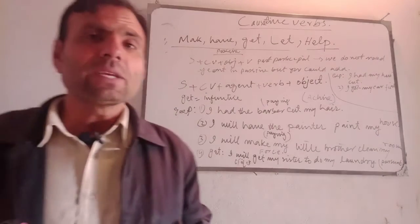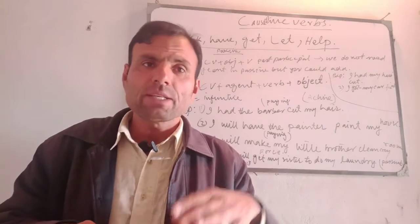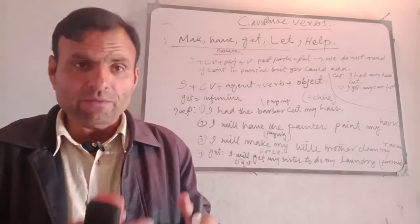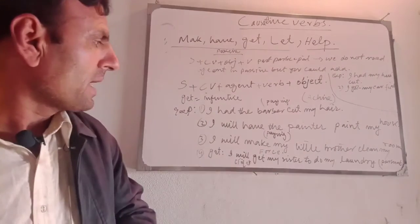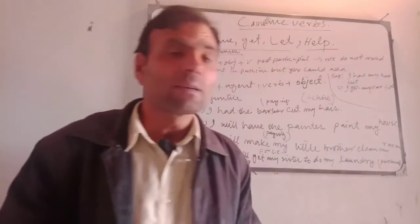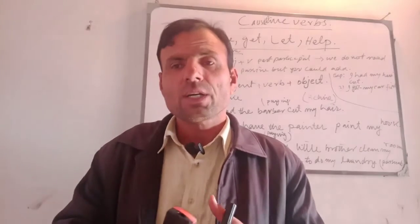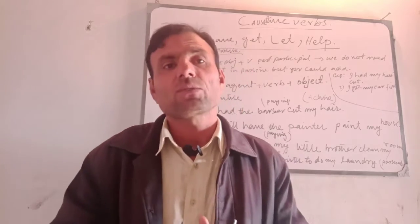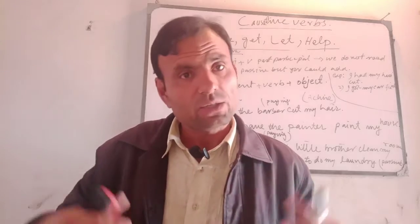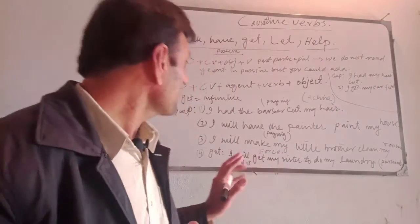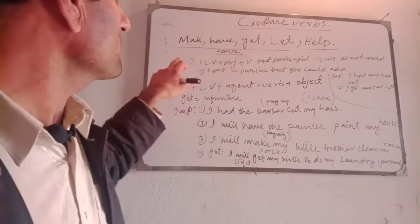Get means you are persuading someone to do something for you — he is equal to you, not your subordinate, not working for you. For example: 'I will get my sister to do my laundry.' You are persuading your sister, who is nice to you, to wash your clothes. These are the active causative verbs.